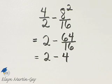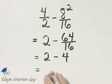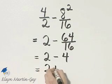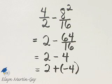So we have 2 minus 4. If you'd like, you can rewrite that as an equivalent addition. That would be 2 plus negative 4.